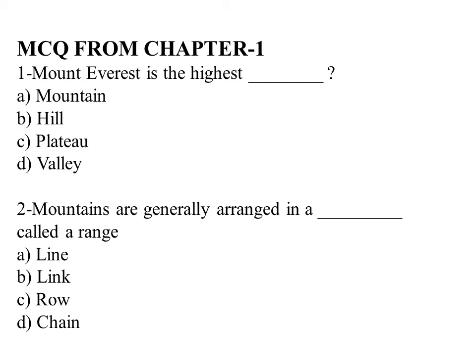Second: mountains are generally arranged in a blank called a — range, line, link, row, or chain. You have to select.